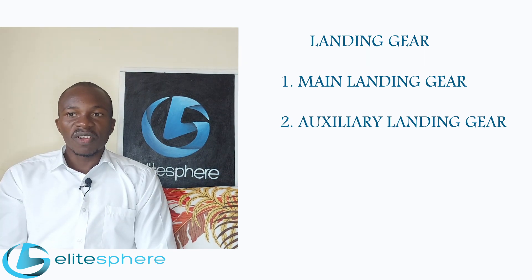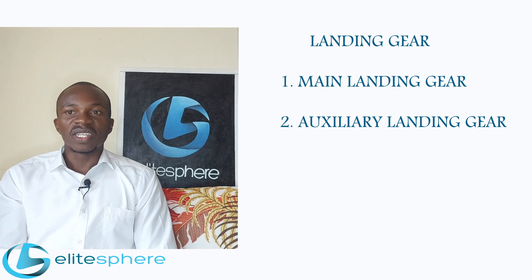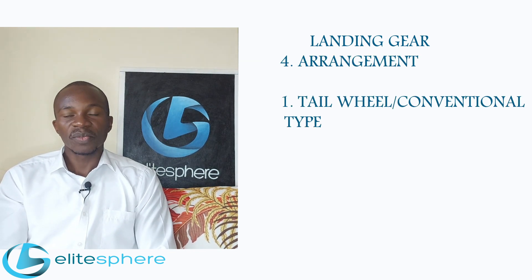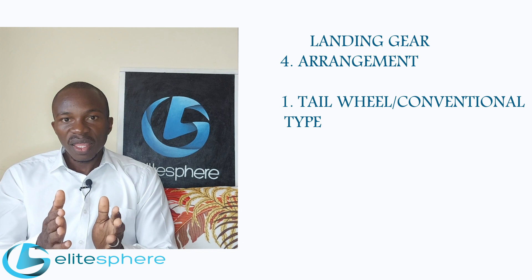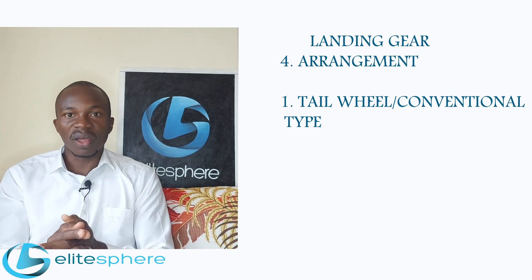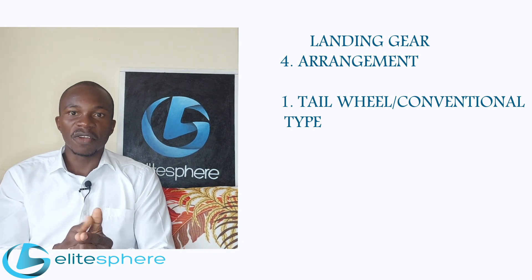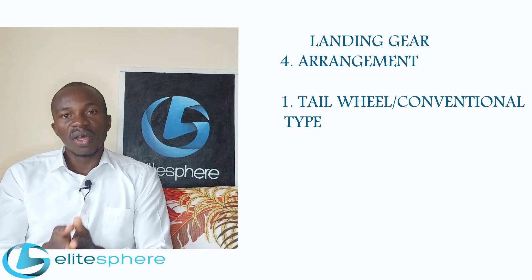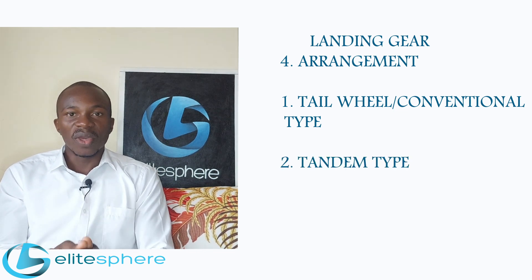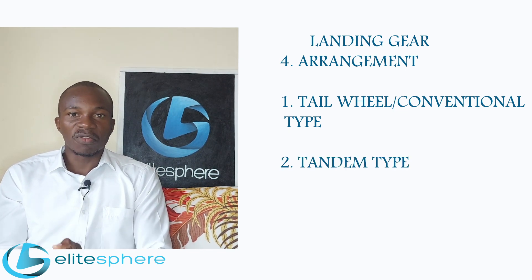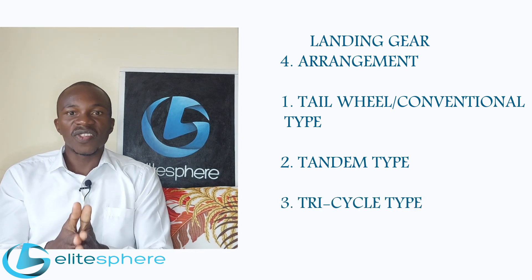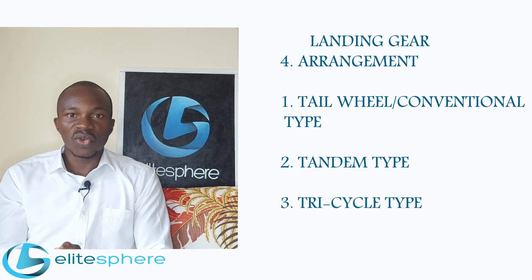On those aircraft that have wheels, we have three types of landing gear configuration. First, the conventional type landing gear configuration, which is the tail wheel type configuration. Second, we have the tandem type landing gear configuration. And third, we have the tricycle landing gear configuration.